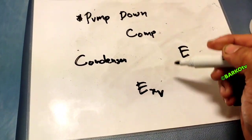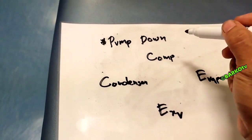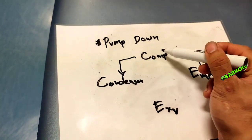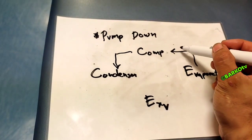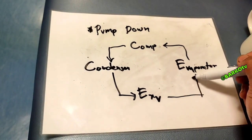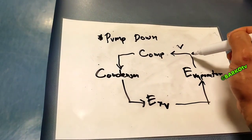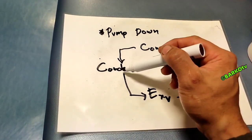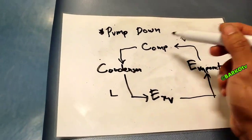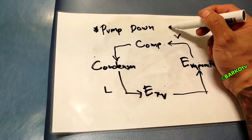These are the four components of your refrigeration system: compressor, condenser, expansion valve, and evaporator. The flow goes from evaporator to compressor, compressor to condenser, condenser to expansion valve, and expansion valve back to evaporator. The vapor side is suction and discharge going to condenser, and after the condenser that is liquid.